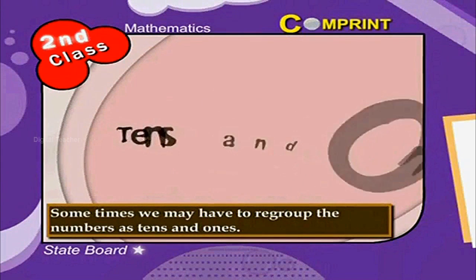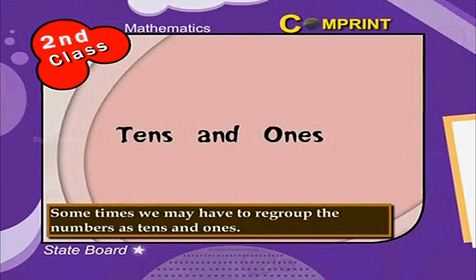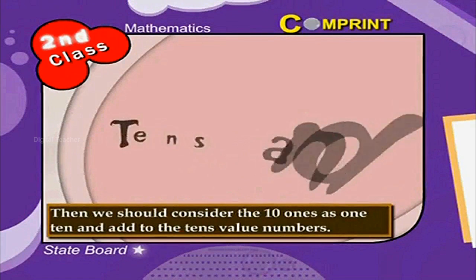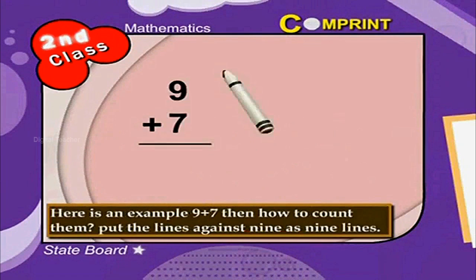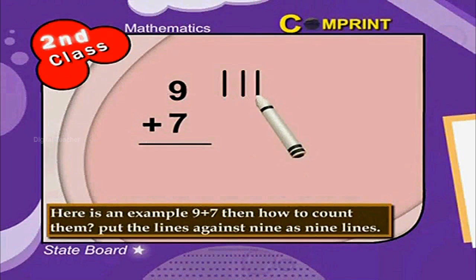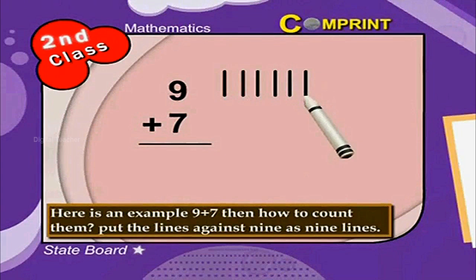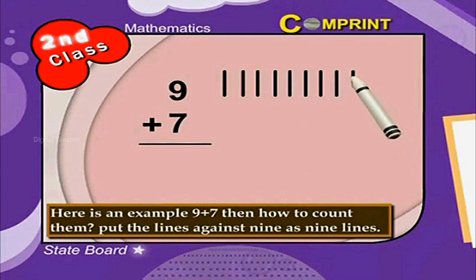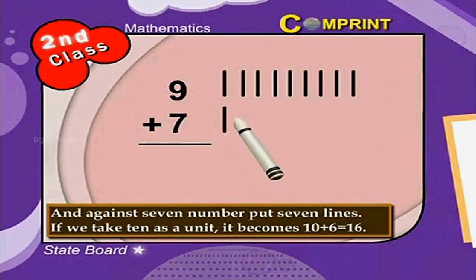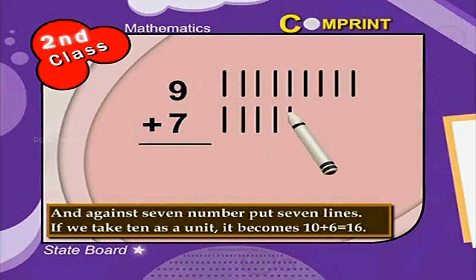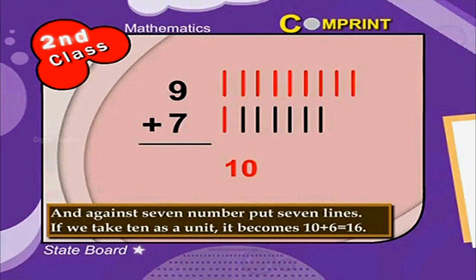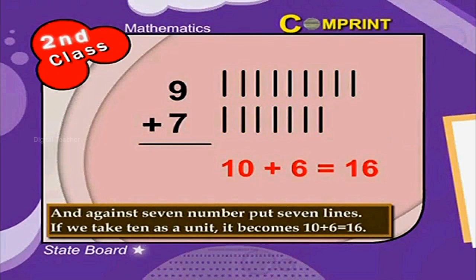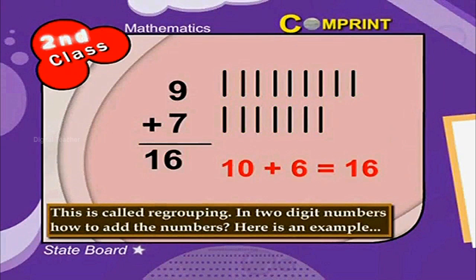Sometimes we may have to regroup the numbers as tens and ones. Then we should consider the 10 ones as one 10 and add to the tens value numbers. Here is an example: 9 plus 7. Put 9 lines against 9 and 7 lines against 7. If we take 10 as a unit, it becomes 10 plus 6 is equal to 16. This is called regrouping.